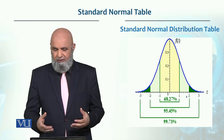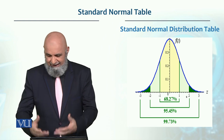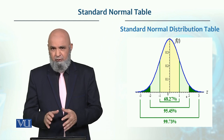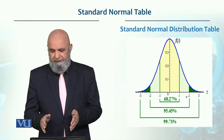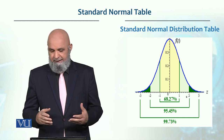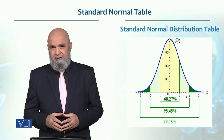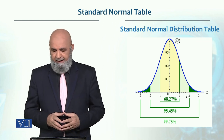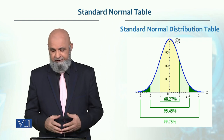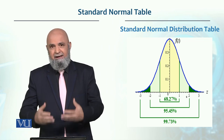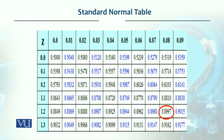This is basically an example of a standard normal distribution table. If you look at ±1 standard deviation, it is 68.27%, or a value of 0.6827. If it is ±2 standard deviations, it is 0.9545, or 95.45%. And if it is ±3 standard deviations, then it is 99.73%, or 0.9973. This is an example of the standard normal table.